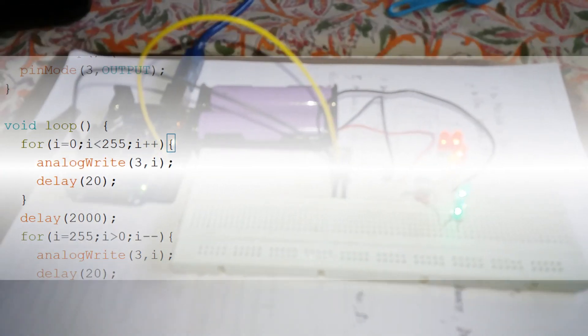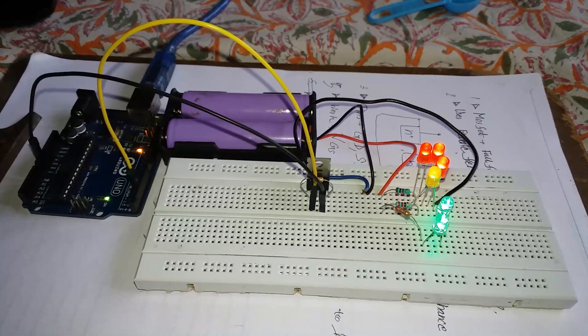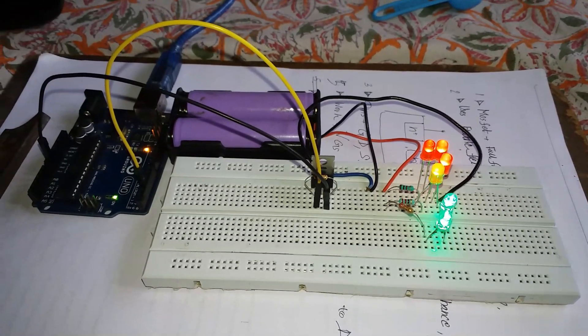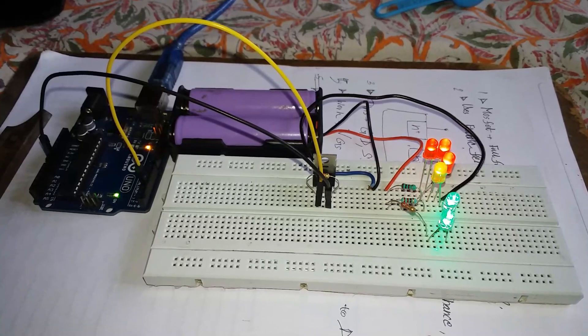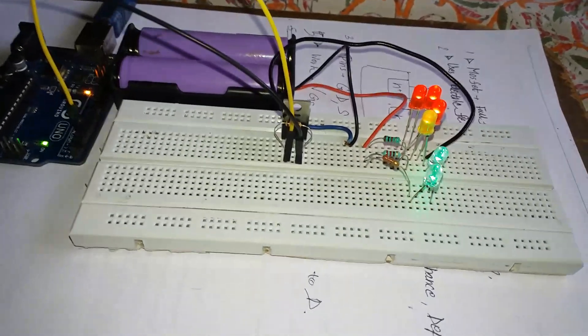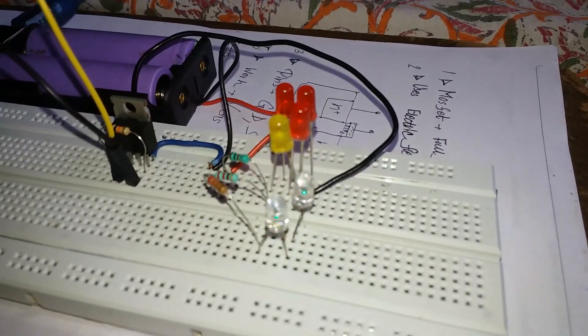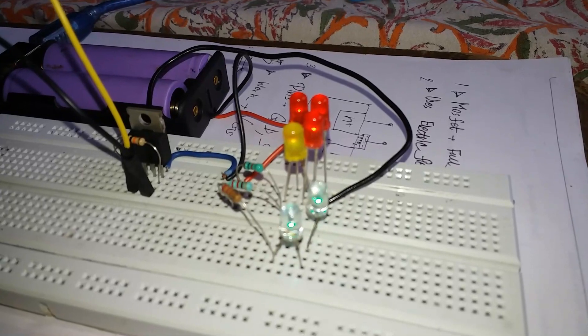The same circuit is there but we have changed the program. The program is the same as the speed control. Now I am using it as an LED dimmer.